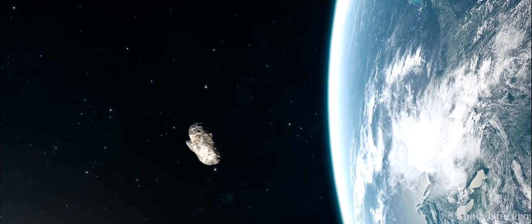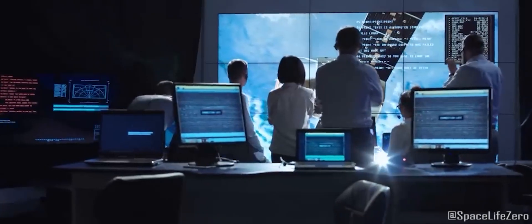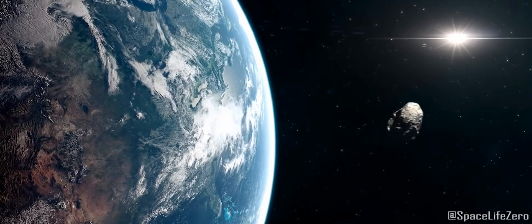While asteroid 2019 DJ-1 is indeed having a close encounter with Earth on September 7, researchers from NASA JPL have determined that there is no risk of impact with Earth during this close approach.